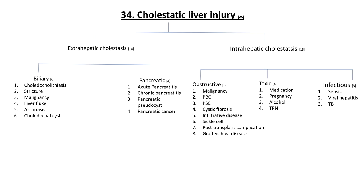Intra-hepatic cholestasis is largely divided into obstructive, toxic, and infectious. Under obstructive: malignancy, primary biliary cholangitis (PBC — formerly called primary biliary cirrhosis), primary sclerosing cholangitis, cystic fibrosis, infiltrative disease (amyloid and sarcoid), sickle cell disease, and post-transplant complications including graft-versus-host disease — eight possible obstructive causes. Toxic causes manifest as a mix between transaminase rise and ductal enzyme rise, with the cholestatic picture predominating — caused by medications, pregnancy, alcohol, and total parenteral nutrition. Infectious causes include sepsis (often bacterial), viral hepatitis, and TB.